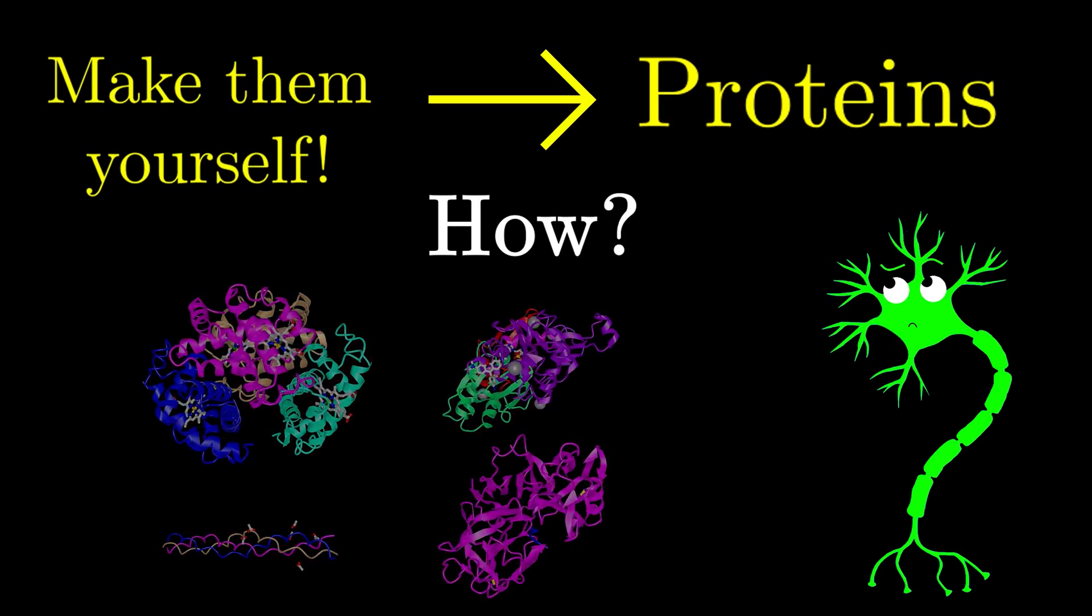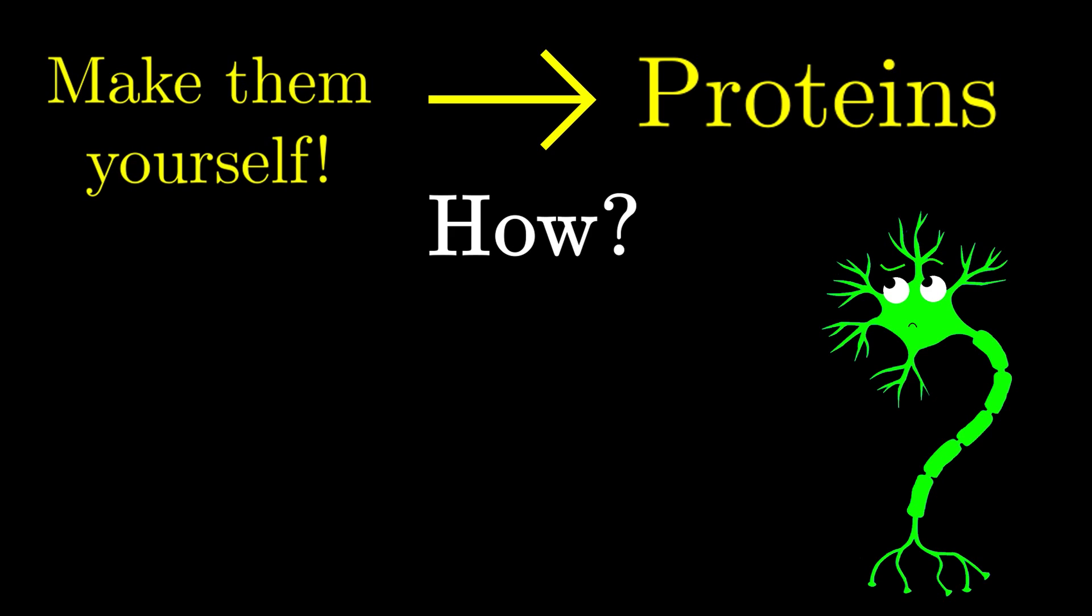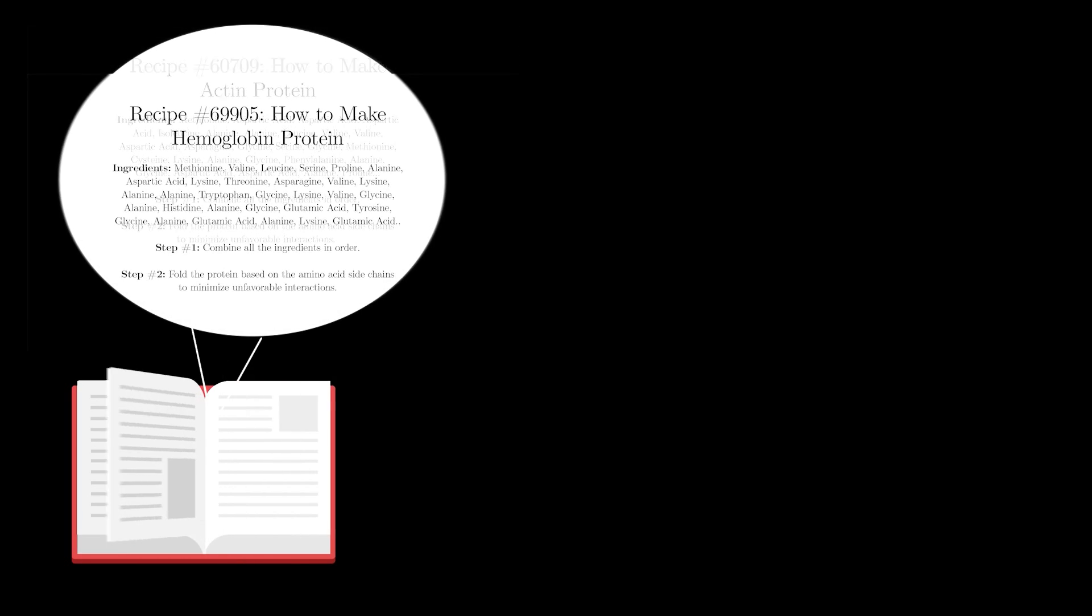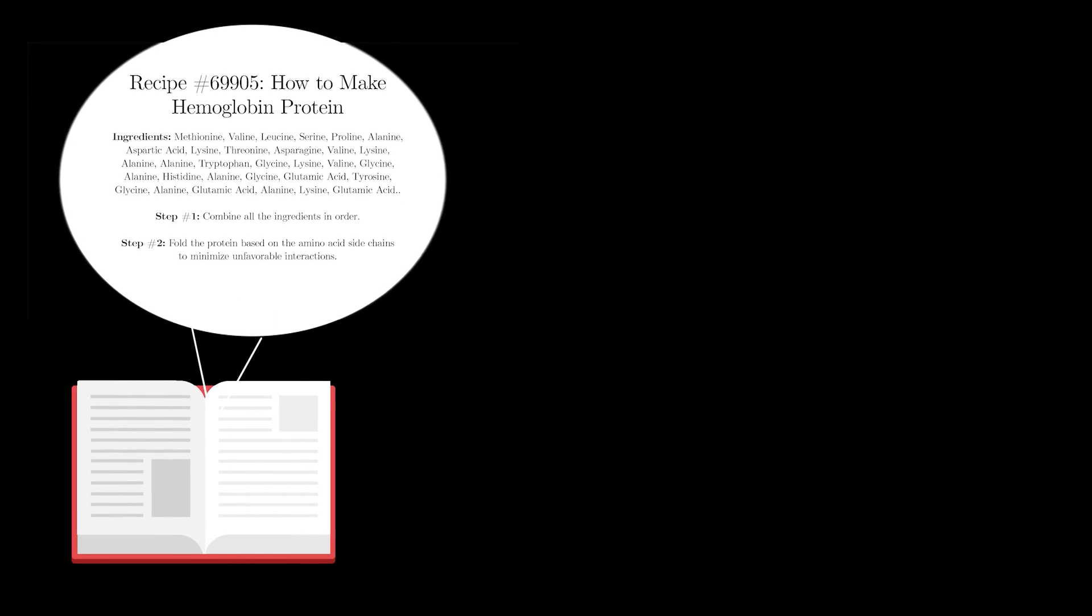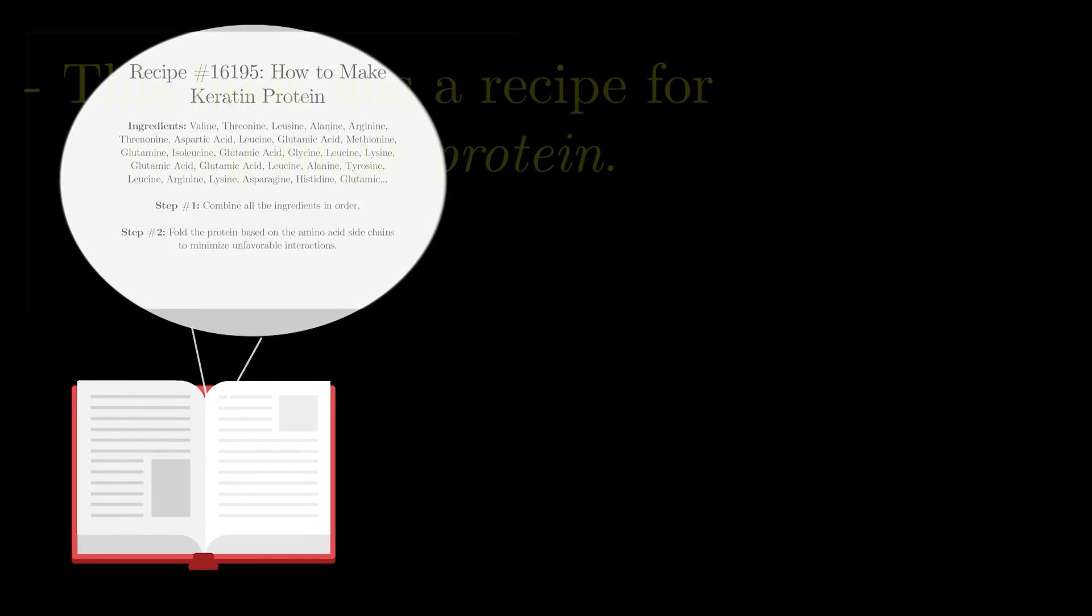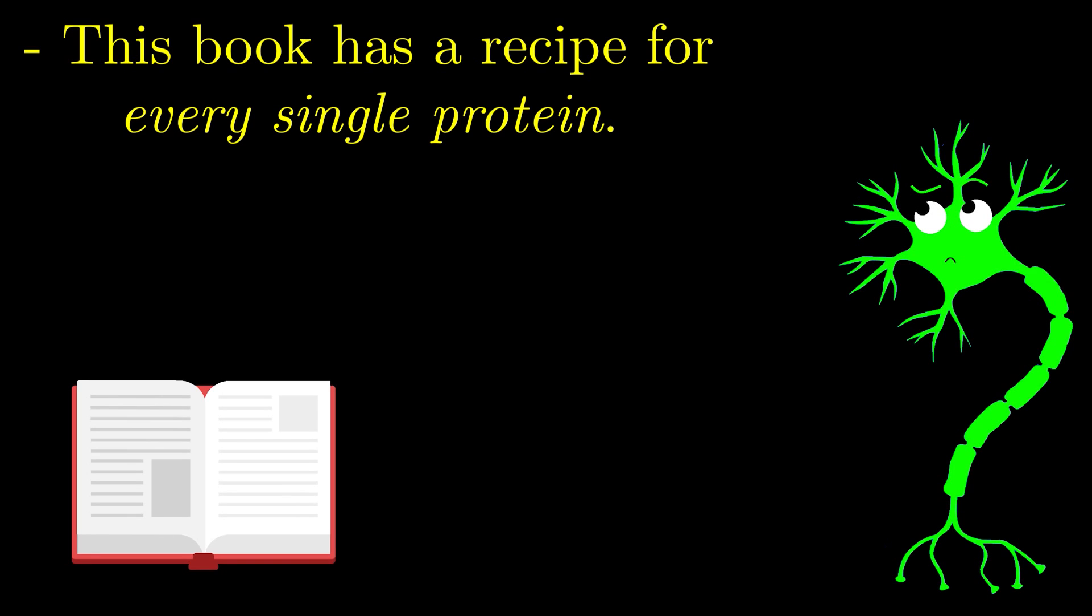And yet, as you'll come to find for most of biology, the answer is actually quite simple. Our body simply has a sort of recipe book, one that contains the instructions and necessary ingredients to make every type of protein. For example, one page in the book might be dedicated to making the actin protein, another page giving instructions to synthesize the hemoglobin protein, another page for the keratin protein, etc. There is a unique recipe for every single protein in this recipe book.